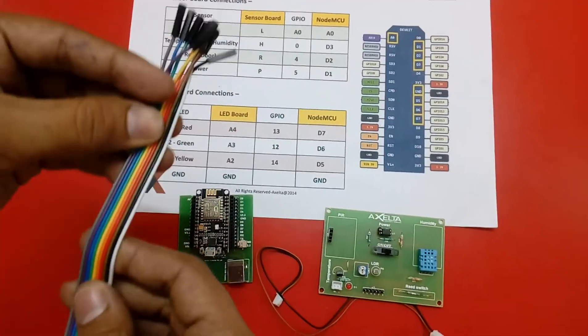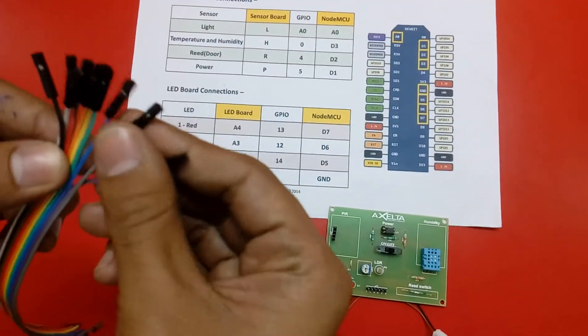Out of this 10 bunch of wires you have to use any 4 wires, so you can peel it out.